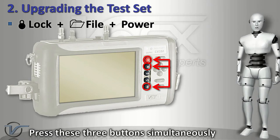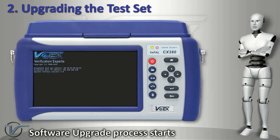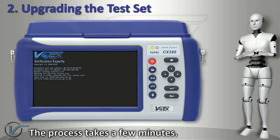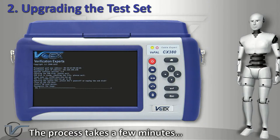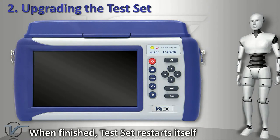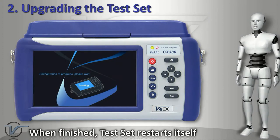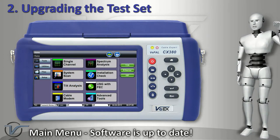Then release the buttons. The software upgrade process starts. The upgrade process will take a few minutes. You may leave the meter unattended during the upgrade process, as it is fully automated. The test set will restart itself when the software upgrade process is complete, and it will go back to the main menu.